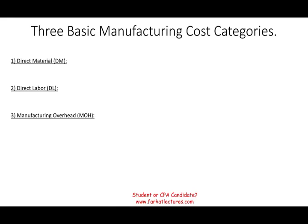Hello, and welcome to the session in which we would look at the three basic manufacturing cost categories: direct material, direct labor, and manufacturing overhead. These topics are covered in a managerial accounting course, cost accounting course, the CPA exam, and the CMA exam.